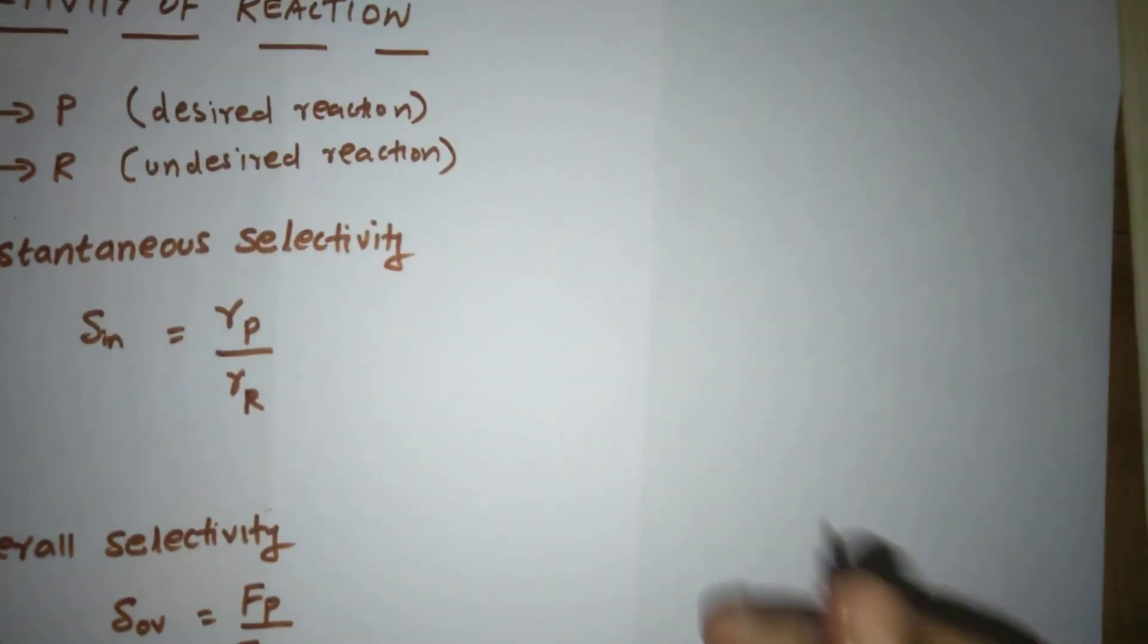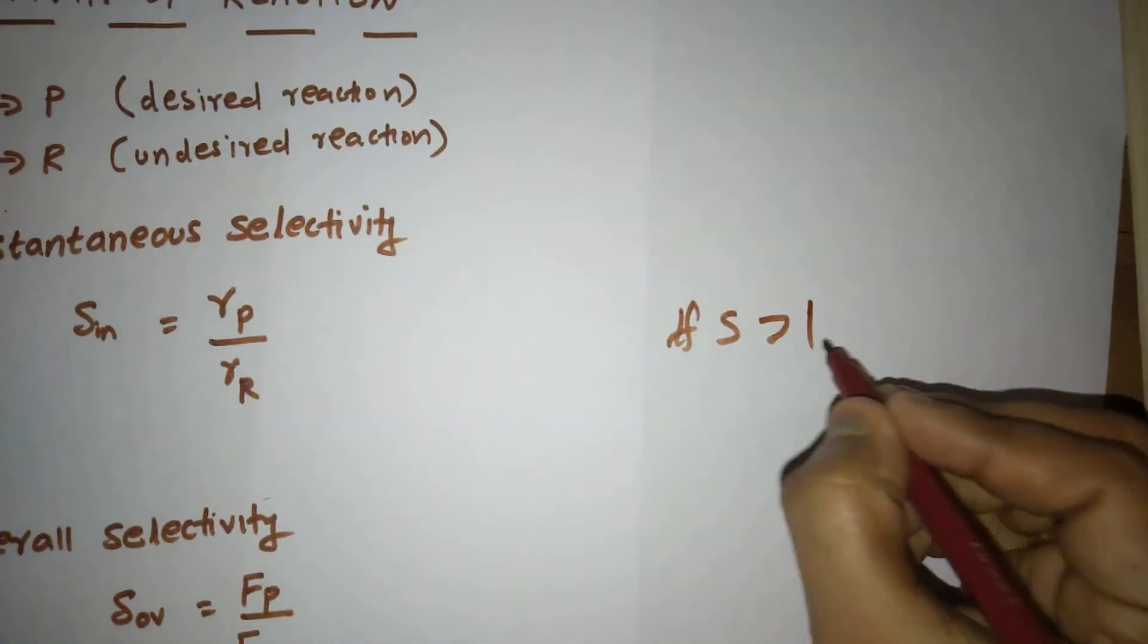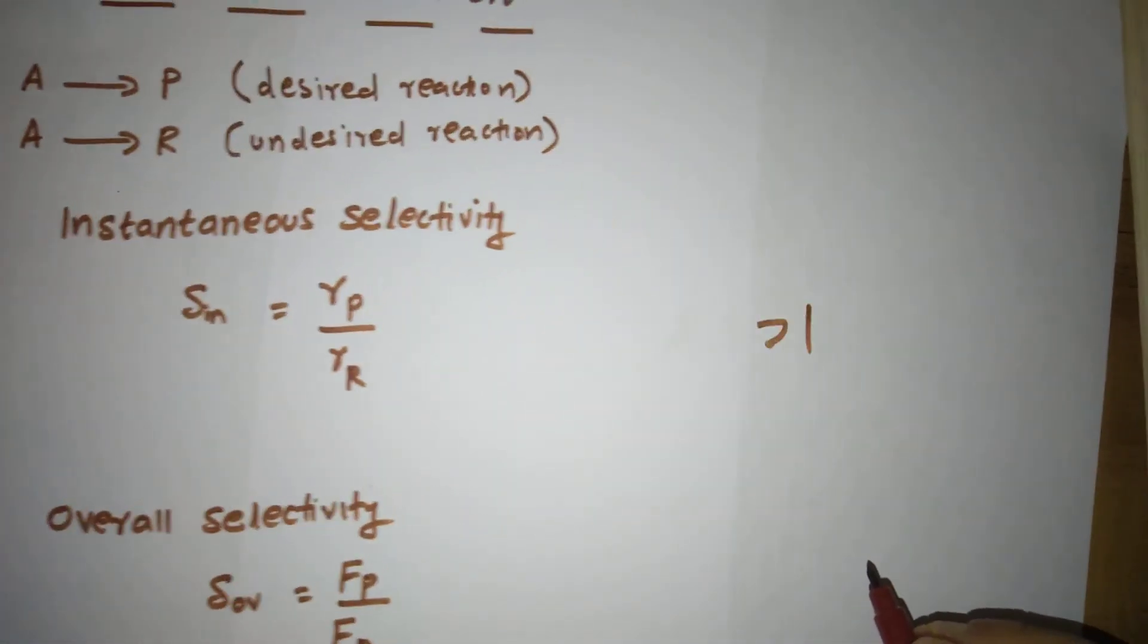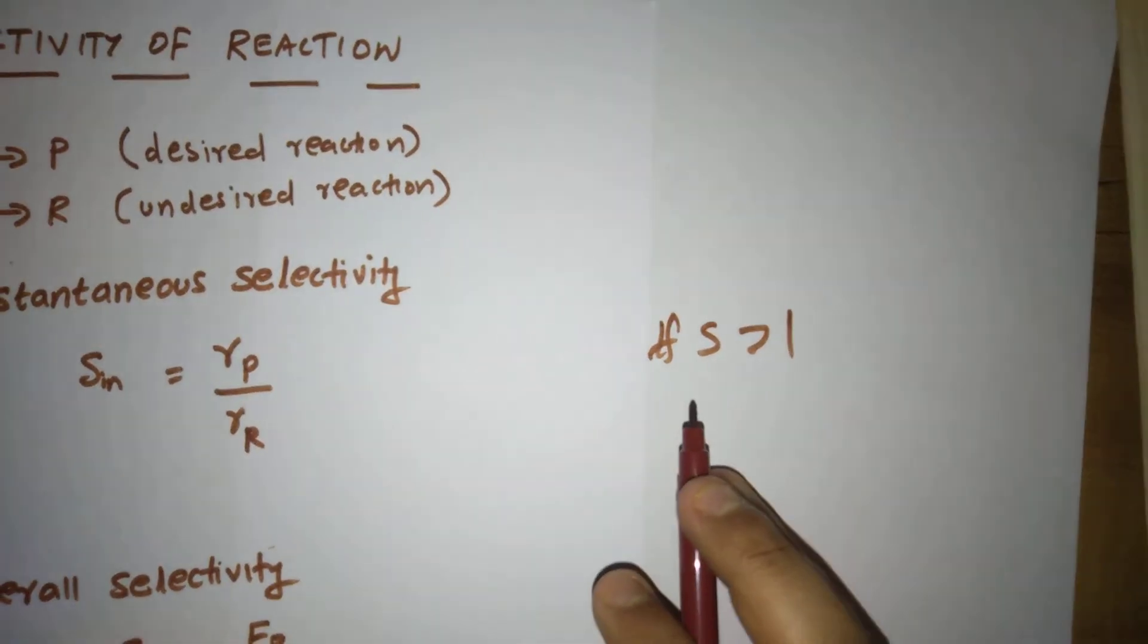If selectivity is greater than one, the desired reaction is dominant. We can tell the reaction is proceeding in the proper way.